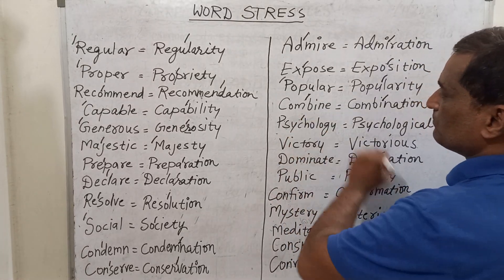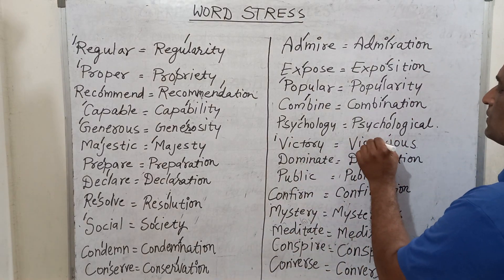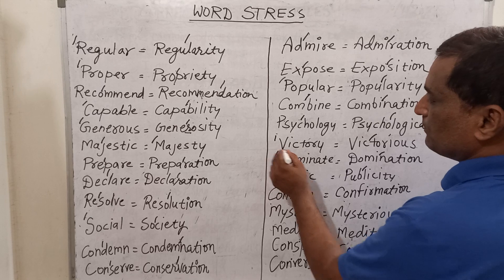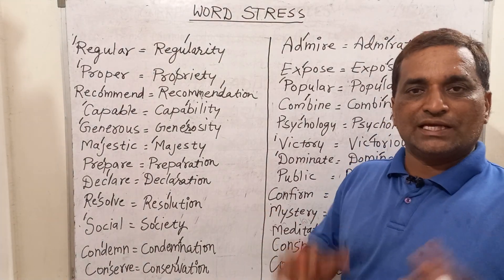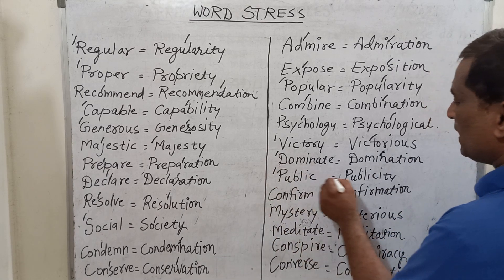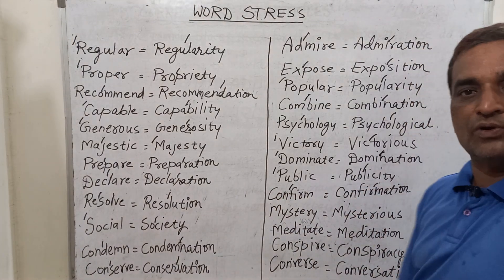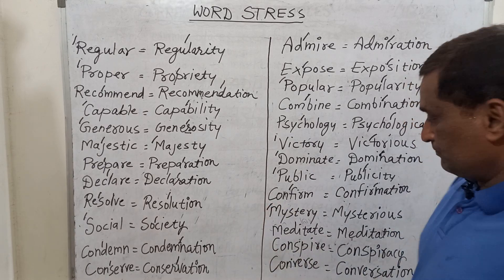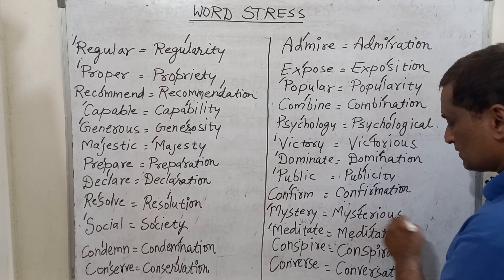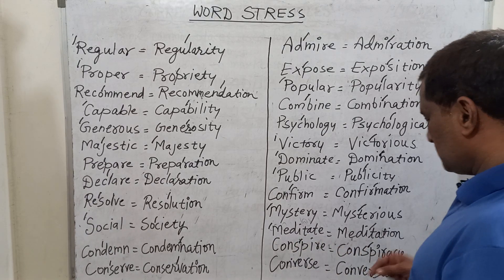For 'psychology', the stress will come before C, and for 'psychological', the stress will come before L. For 'victory', the stress will come before V, and for 'victorious', the stress will come before T. For 'dominate', the stress will come before D, and for 'domination', the stress will come before N. For 'public', the stress will come before P, and for 'publicity', the stress will come before L. For 'confirm', the stress will come before F, and for 'confirmation', the stress will come before M. For 'mystery', the stress will come before M, and for 'mysterious', the stress will come before T. For 'meditate', the stress will come before M, and for 'meditation', the stress will come before T. For 'conspire', the stress will come before P, and for 'conspiracy', the stress will also come before P.